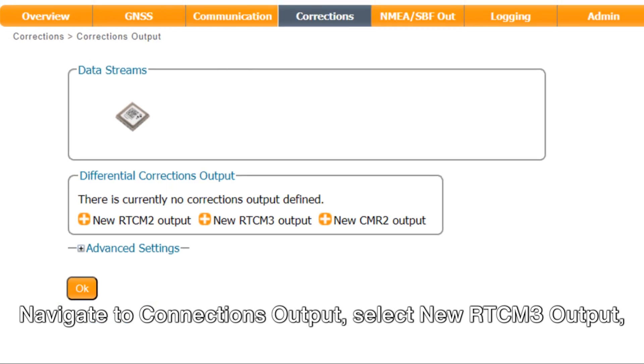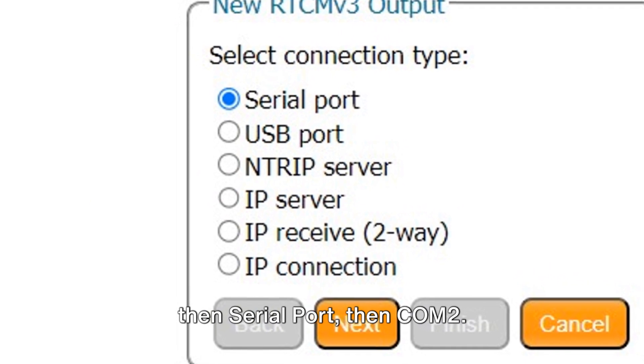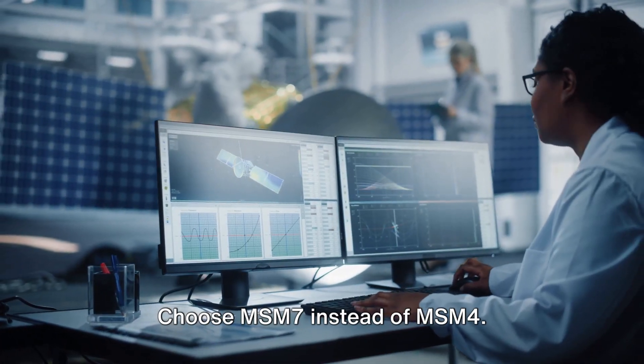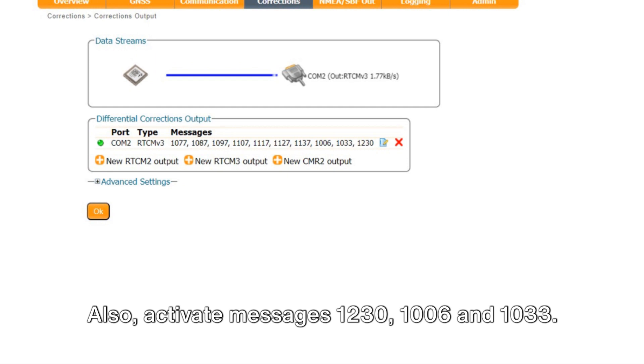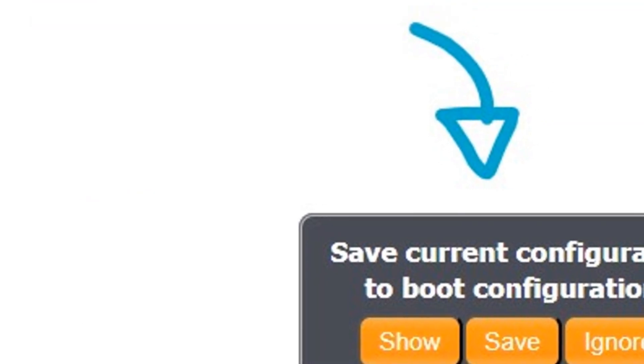Navigate to connections output. Select new RTCM 3 output, then serial port, then COM 2. Choose MSM 7 instead of MSM 4. Also, activate messages 1230, 1006, and 1033. Don't forget to save the configuration when prompted.